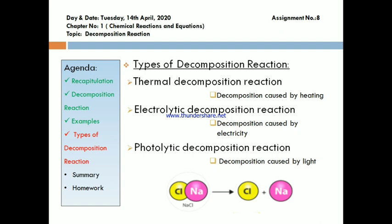The third type is photolytic decomposition reaction. The reaction which takes place in the presence of light energy is known as photolytic decomposition reaction. Example: when silver chloride comes in contact with sunlight, it splits into silver and chlorine gas. Silver chloride was used in camera films — if the negative, which has a coating of silver chloride, comes in contact with sunlight, the silver chloride splits into silver and chlorine, and thus the negative is damaged.